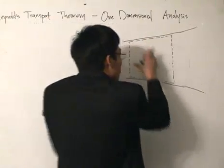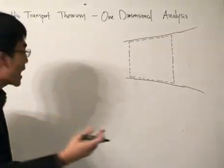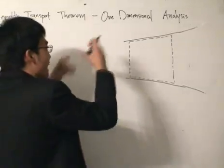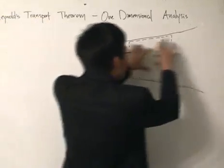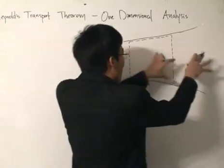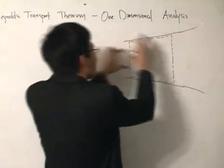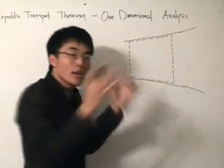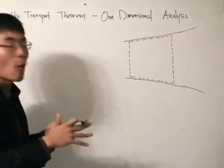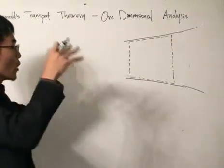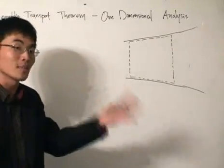That is the volume we're looking at. By system analysis, we are analyzing a system of particles as it moves through this pipe. It may go inside the control volume, it may go out, it may go inside and stay there — we don't know. But we are still limiting our analysis to a system of particles; that's what we do in system analysis.